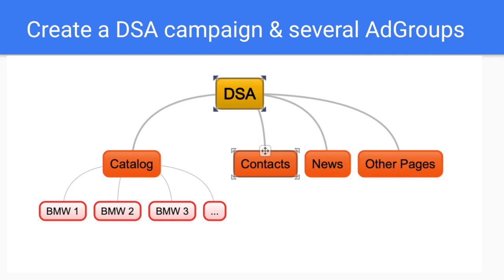To make DSA work really well, I recommend you create several ad groups inside your DSA campaign with different sections of your site. Make a different ad group for the catalog, different ones for contacts, news, and other sections. The reason is the same: we want to cut DSA into pieces and see what actually works and what doesn't. Google will try to pull all the data into one big piece and it's very difficult to work with that — you also won't see a lot of search queries at all. So instead of creating a mess, separate everything into distinct directions. Create several ad groups with the different parts of your site and measure them differently.